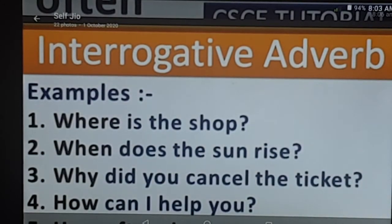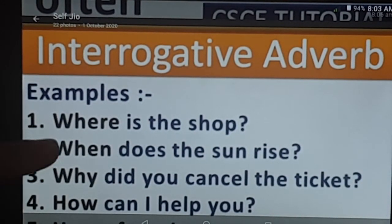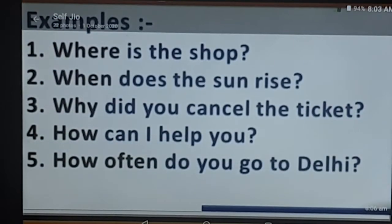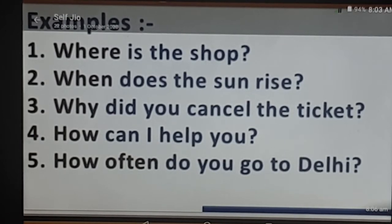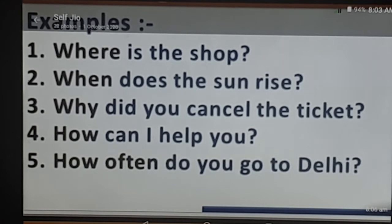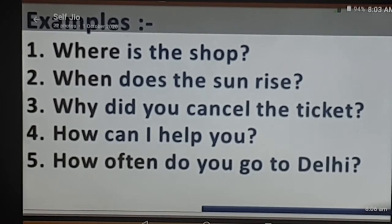Examples: 'Where is the shop? When does the sun rise? Why did you cancel the ticket? How can I help you? How often do you go to school?' Remember: 'where' is one of the kinds of adverbs because it tells us about place; 'when' tells us about time.